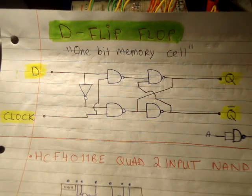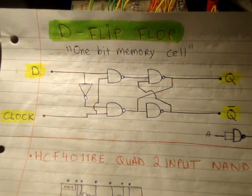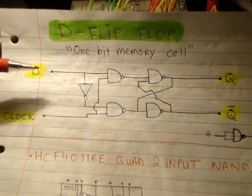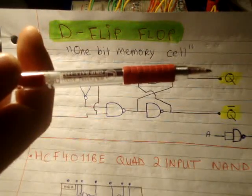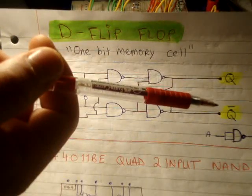What it'll do is it will remember your input. Your input will be D and your output will be Q. As with the RS flip-flop, we had a NOT Q as well.